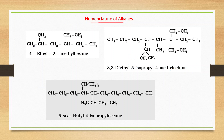Now, nomenclature of alkanes — we will revise the rules with examples. Select the longest chain: numbering gives positions 1, 2, 3, 4, 5, and 6. At the second position there is a methyl group and at the fourth position there is an ethyl group. In alphabetical order, ethyl comes before methyl, so this compound is called 4-ethyl-2-methylhexane.